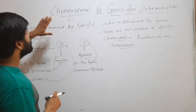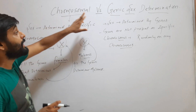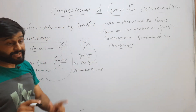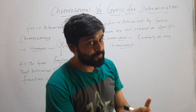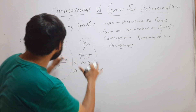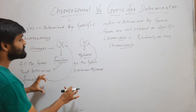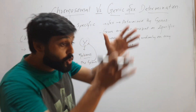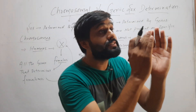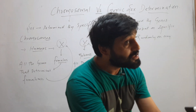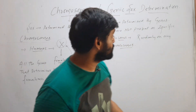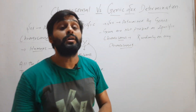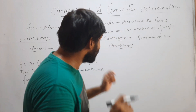In both chromosomal and genic sex determination, sex is determined by genes. But in chromosomal sex determination, all the genes that determine sex are present on a specific chromosome. In genic sex determination, they are present on random chromosomes.